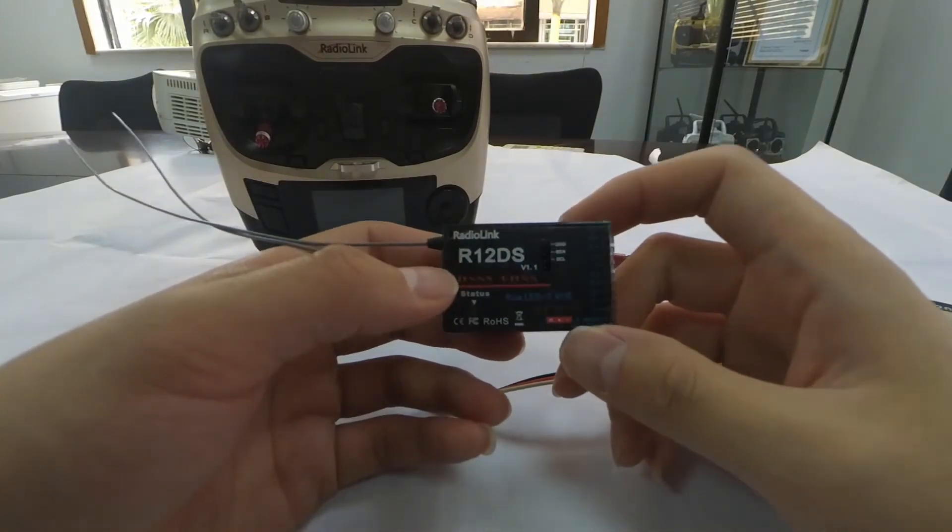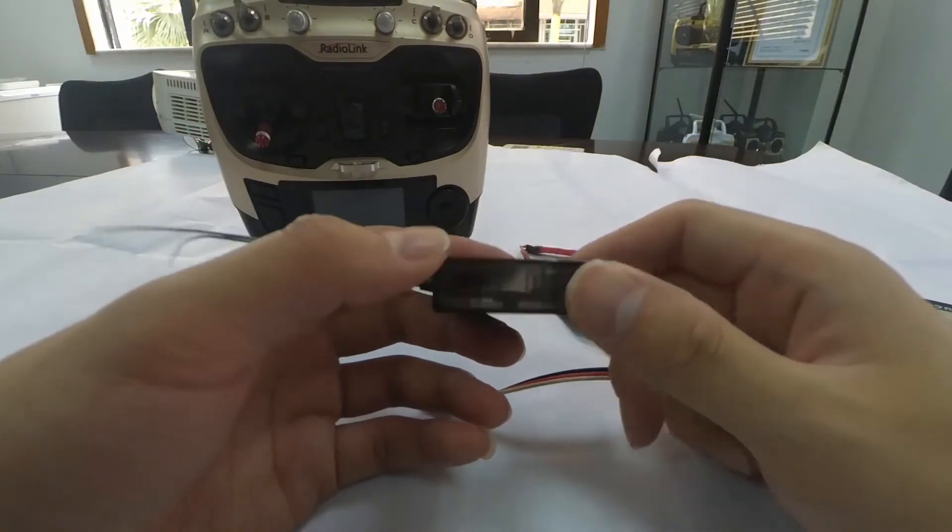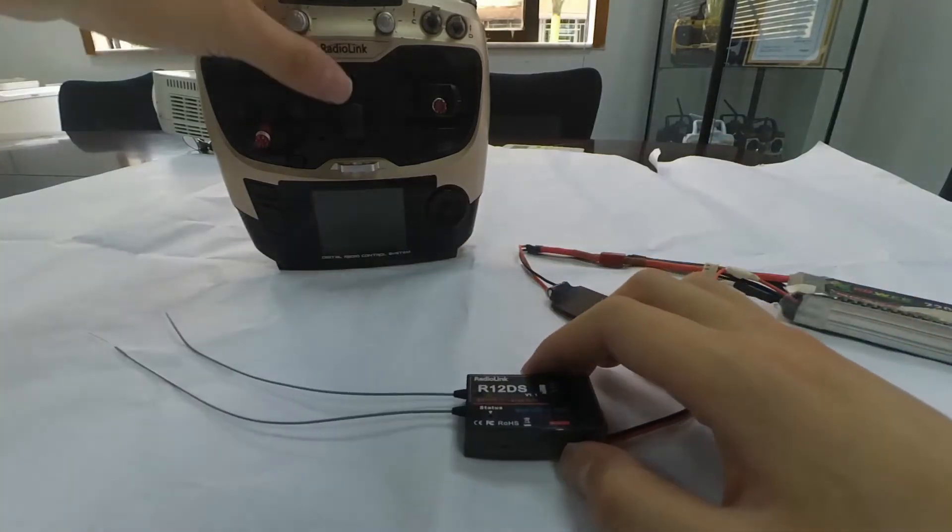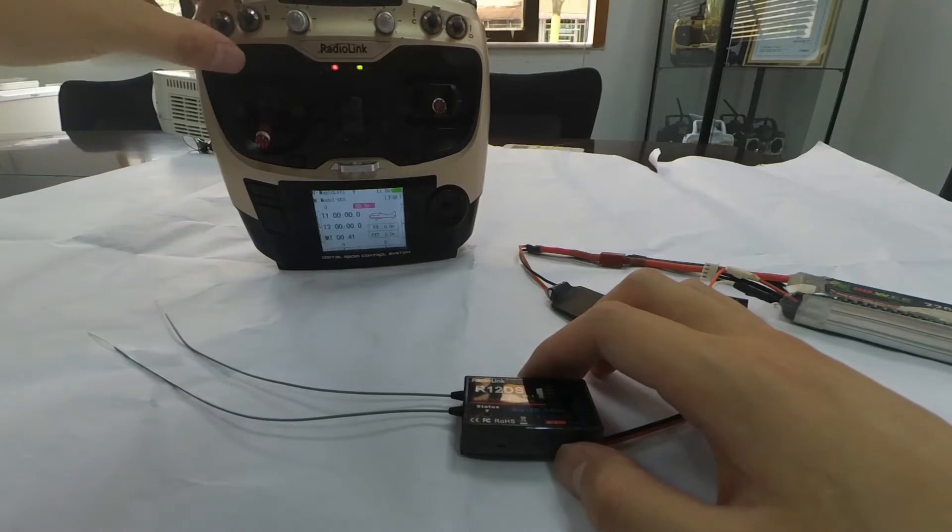R12DS is a receiver with 12 channels. Now I'm going to show you how to do the binding and how to change signal output. Let's take 89S as an example.